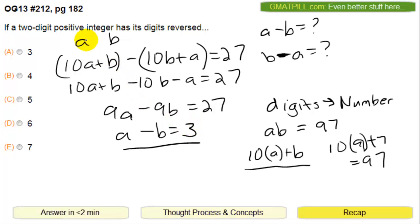So as a recap, we were given digits. We converted those digits to a number through this formula, 10A plus B. And then compared this formula for the first format with the second format where you swapped the two digits. This comparison led us to a difference of 27. Then from there, we calculated what the difference between A and B in terms of the digits, and that's 3.